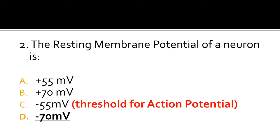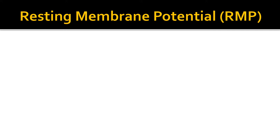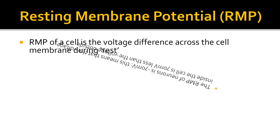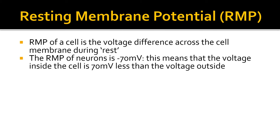Minus 55 millivolts is the action potential threshold. The resting membrane potential, or RMP, of a cell is the voltage difference across the cell membrane during rest. The RMP of neurons is minus 70 millivolts, meaning the voltage inside the cell is 70 millivolts less than the voltage outside.